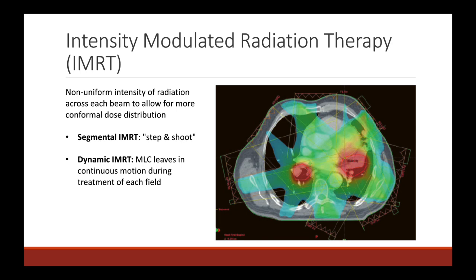One way of doing IMRT is segmental IMRT, where the beam positions itself at the correct angle, the MLC leaves come into place, and then the radiation is given all at once in what is called a step-and-shoot approach. There is also dynamic intensity modulated radiation, where the MLC leaves can actually continuously move while the radiation is being delivered. IMRT helps us create much more conformal dose distributions — the red area of the color wash, which represents our therapeutic radiation dose, is really conformal to the drawn target organ we want to treat.